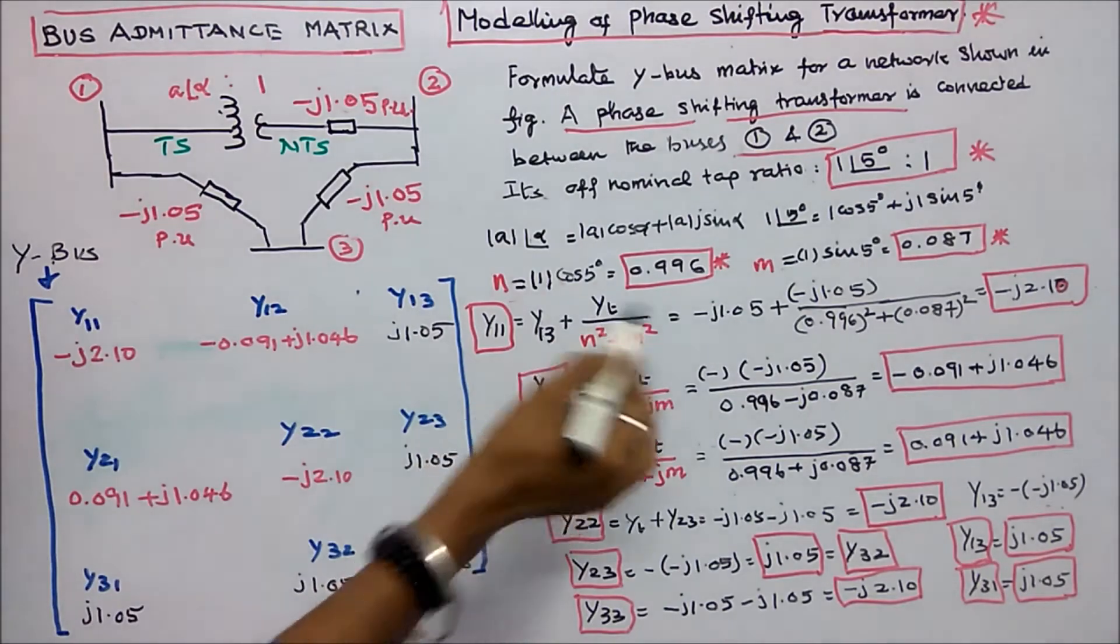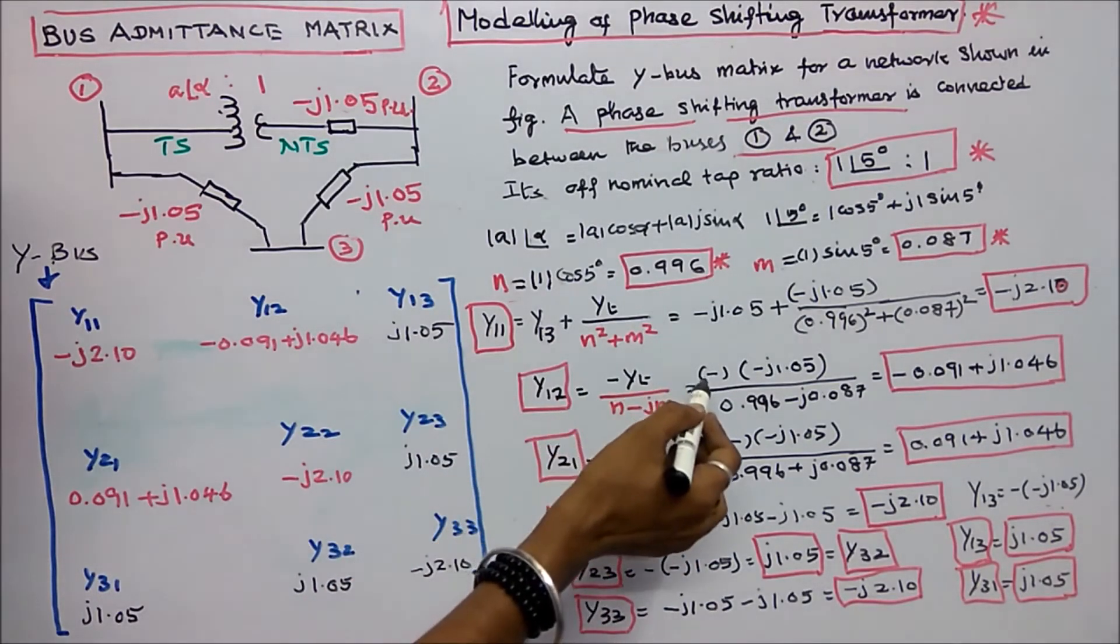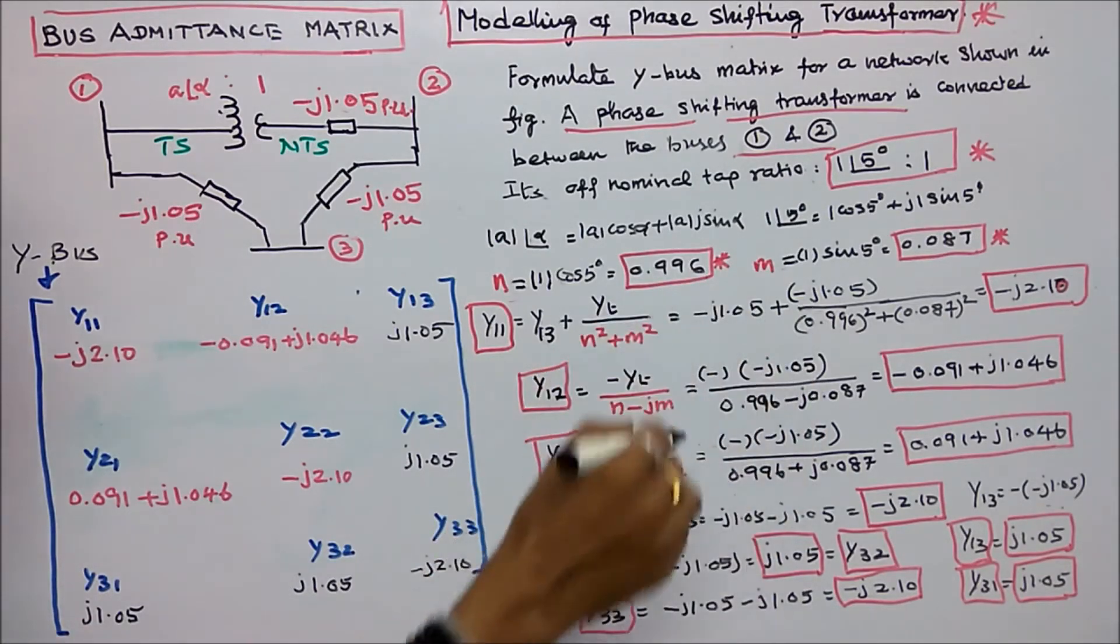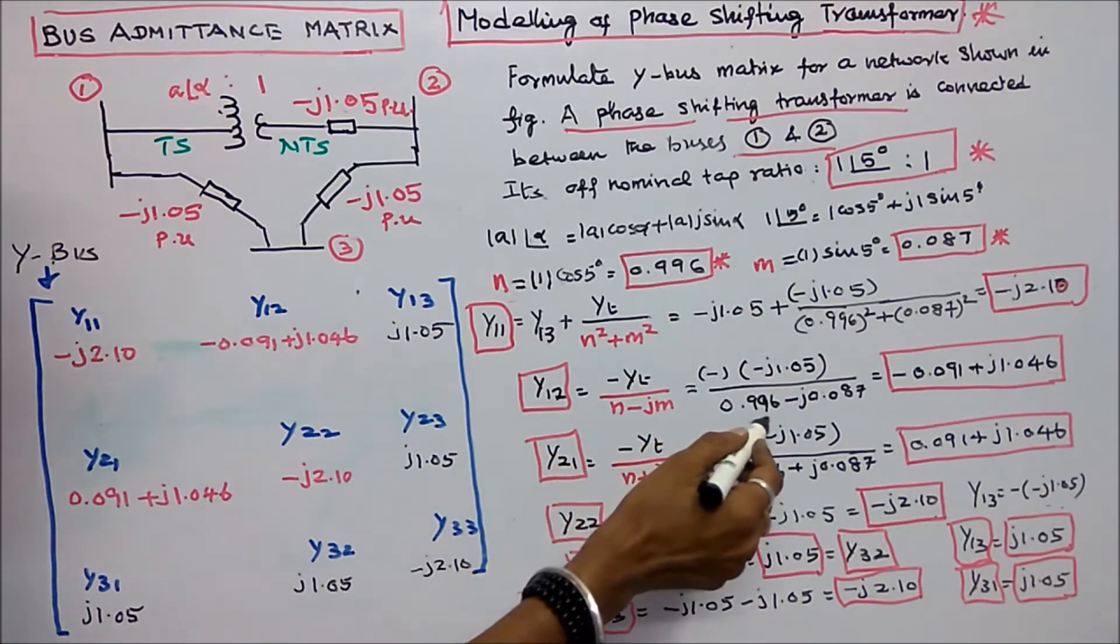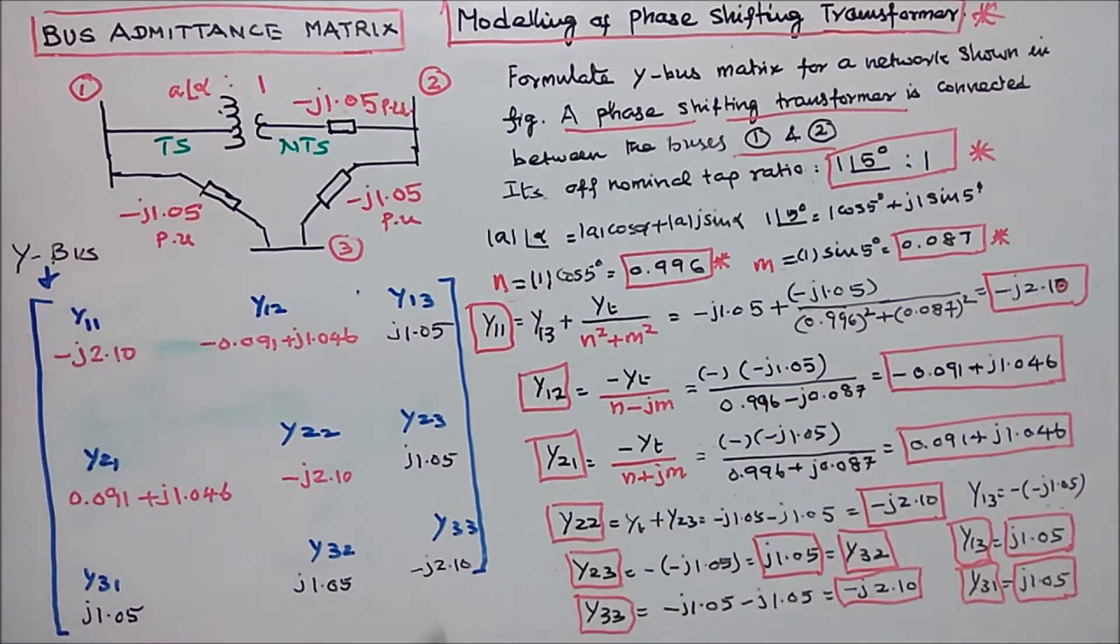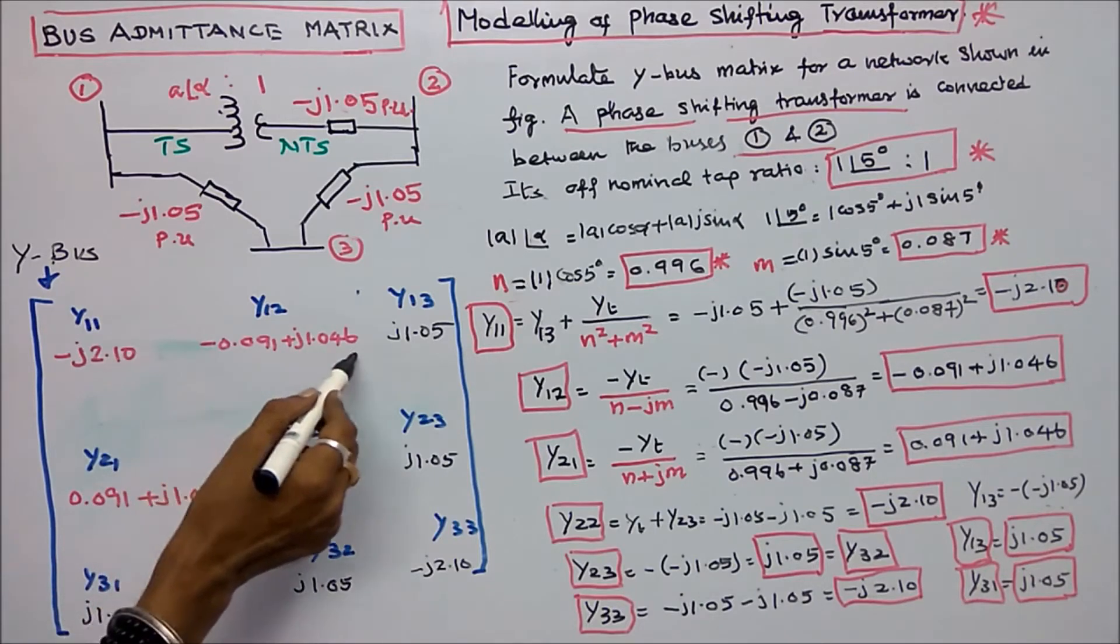y12 is equal to minus yt divided by n minus j f. Minus into minus j 1.05 plus j 1.05 divided by n, 0.996 minus j 0.087. That is equal to minus 0.091 plus j 1.046.